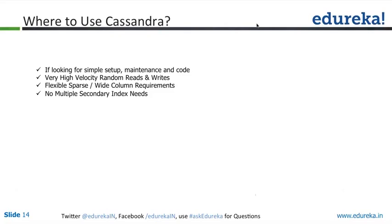Cassandra also supports flexible, sparse, wide-column requirements — where you have the capability to increase your columns for a specific type as and when you need. On a need basis, you can alter your schema. It absolutely has no restrictions on that.